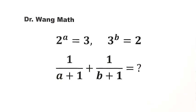In this video, we can solve a question from the Chinese Math Olympiad. Given 2 to the power of a equals 3, 3 to the power of b equals 2, then what is 1 over a plus 1 plus 1 over b plus 1?